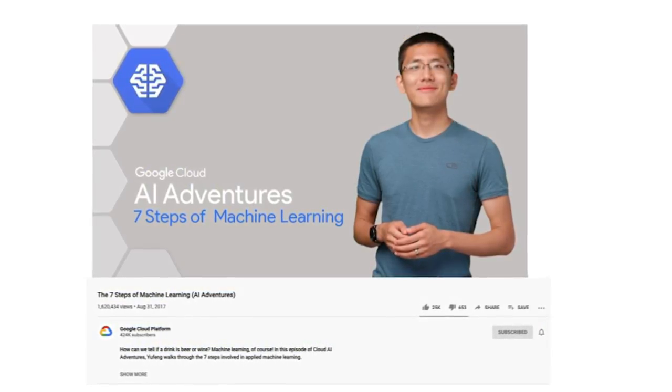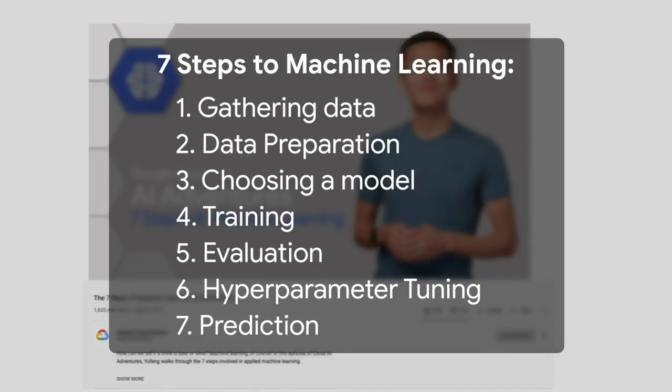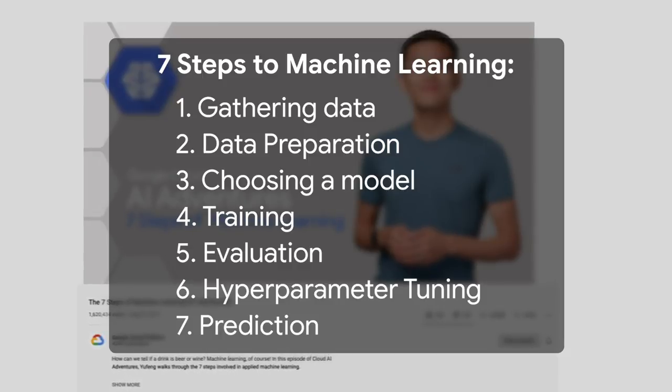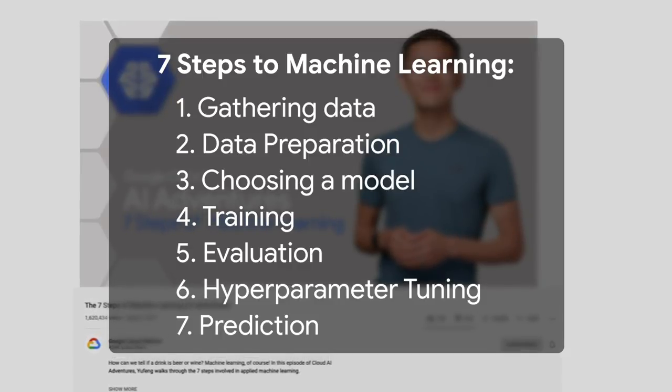STEPHANIE WONG: I want to dive into that because you had a popular video on the seven steps to machine learning — gathering your data, data preparation, choosing a model, training, evaluation, hyperparameter tuning, and prediction. Can you tell me about each step in detail? Sure. With these seven steps — there's no real fixed number, you can break it out however you'd like. A lot of times different steps can be collapsed into one job role. It could be one week's worth of work where you gather data and do data preparation, cleaning, and things like that — you might end up making a pipeline.